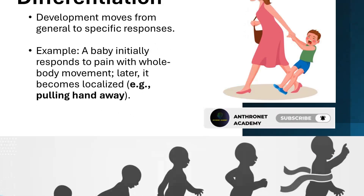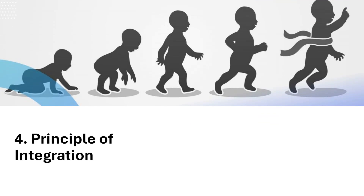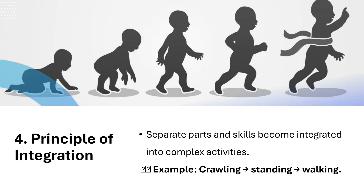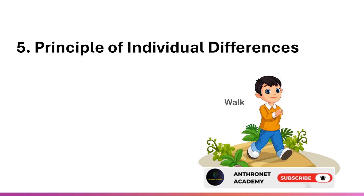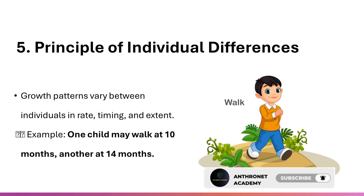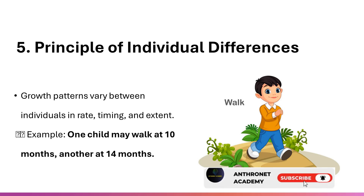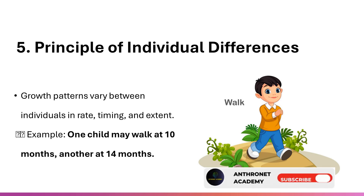Principle 4 — Integration: separate parts and skills become integrated into complex activities. Example: crawling, standing, walking. Principle 5 — Individual differences: growth patterns vary between individuals in rate, timing, and extent. Example: one child may walk at 10 months, another at 14 months.